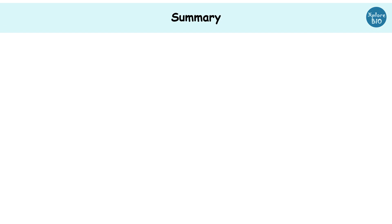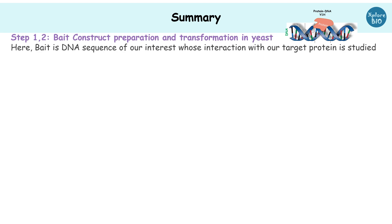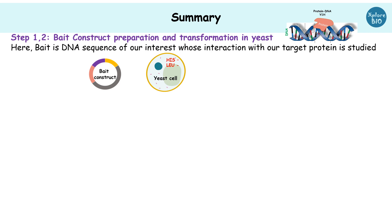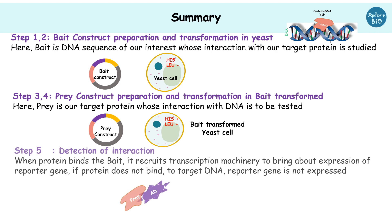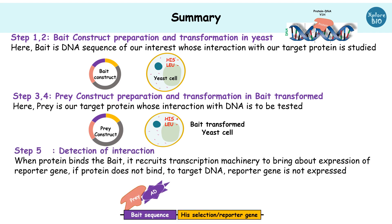To sum up, yeast one hybrid studies protein-DNA interaction. For a yeast one hybrid experiment, you create a bait construct and transform it into a yeast cell. Here, bait is a DNA sequence whose interaction with a particular protein needs to be checked. Next, we use a prey construct which is then transformed into the yeast cell containing the bait DNA. If the prey protein binds to the bait sequence, it leads to the expression of the reporter gene downstream of the bait, which is seen as grown colonies on selective media.